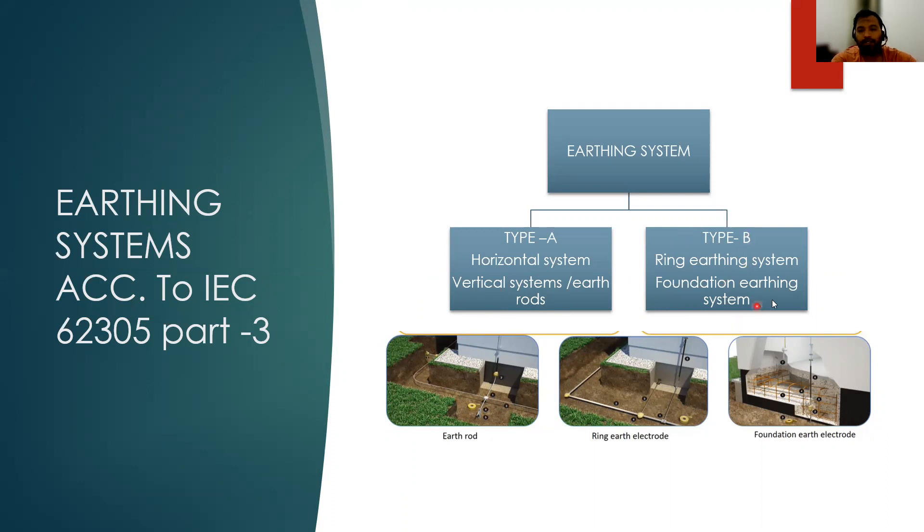In type B system, we have a foundation earthing system and ring earthing system. In this case, instead of the earth rods, we use a foundation as an earthing system and these are connected horizontally. This type of system is called type B system. In UAE and most of the Gulf areas, we are using a type A system.